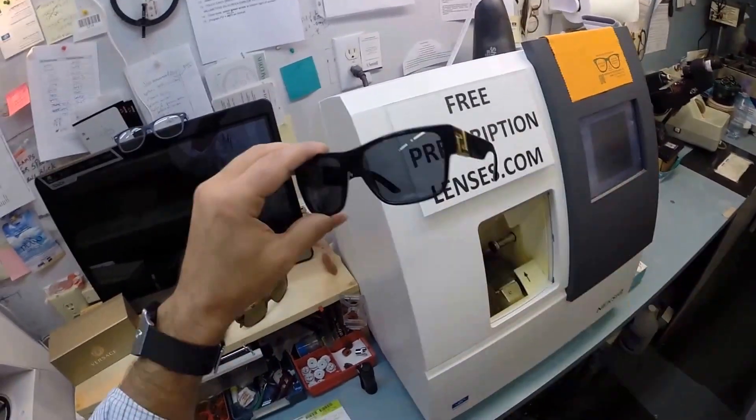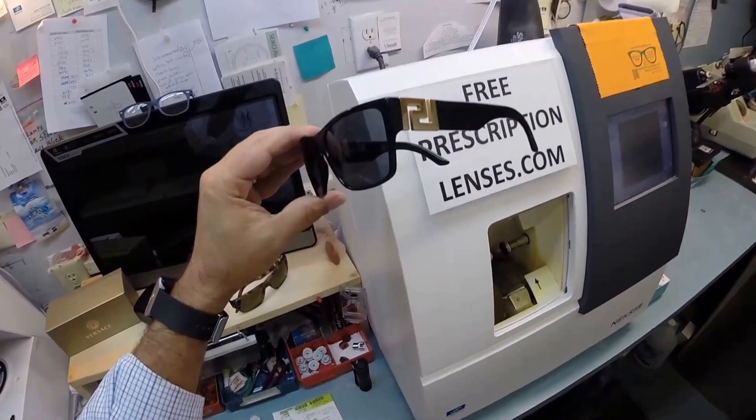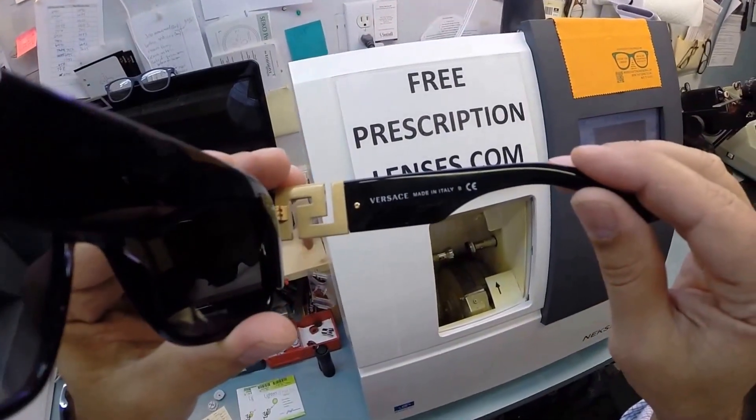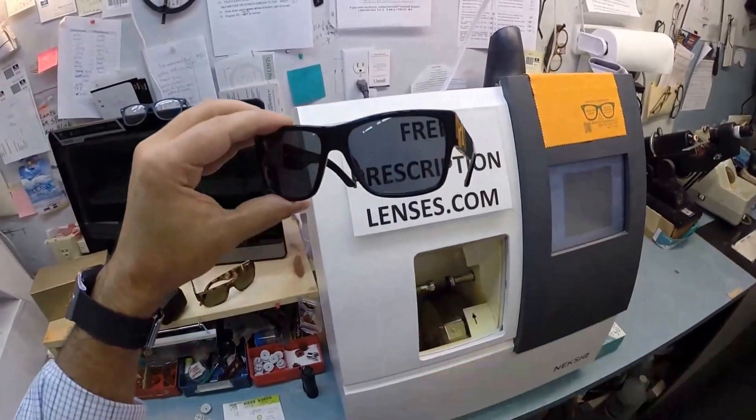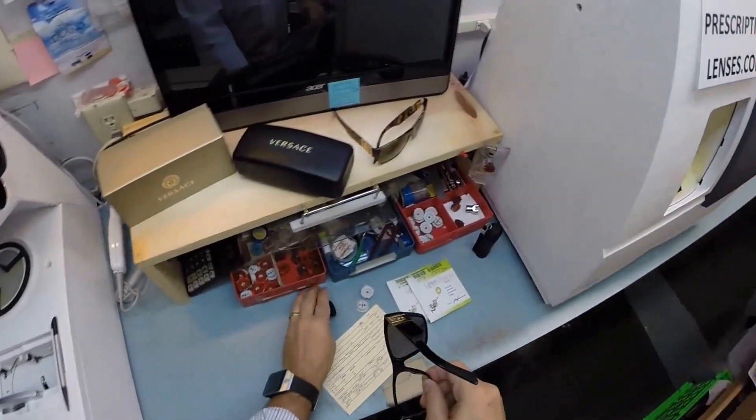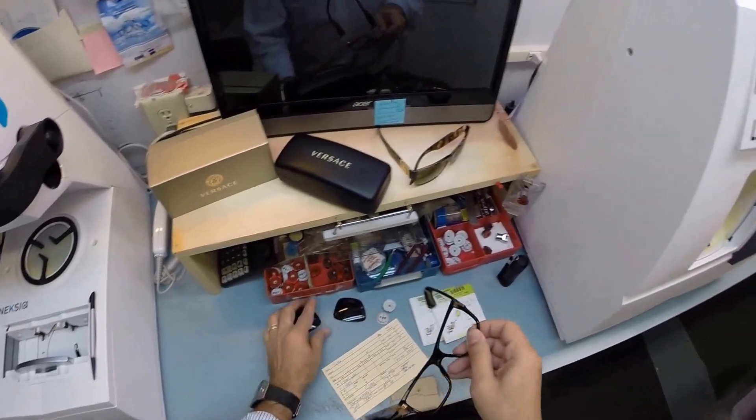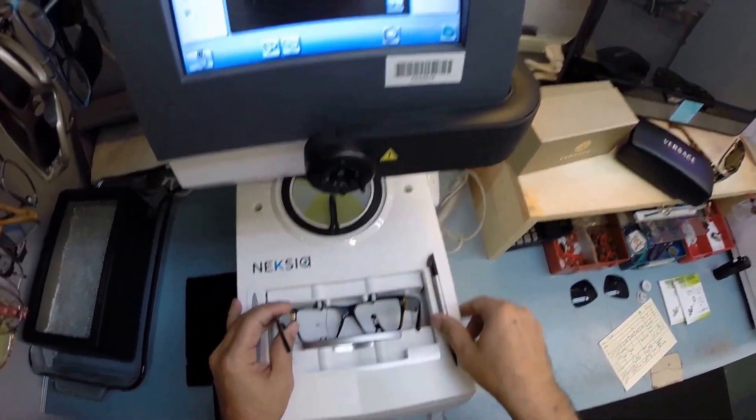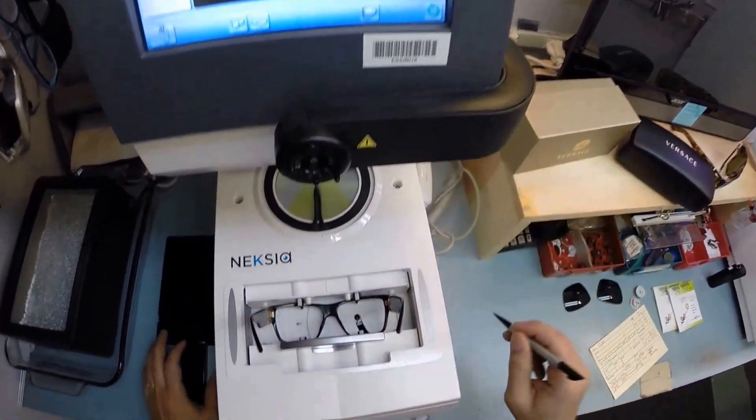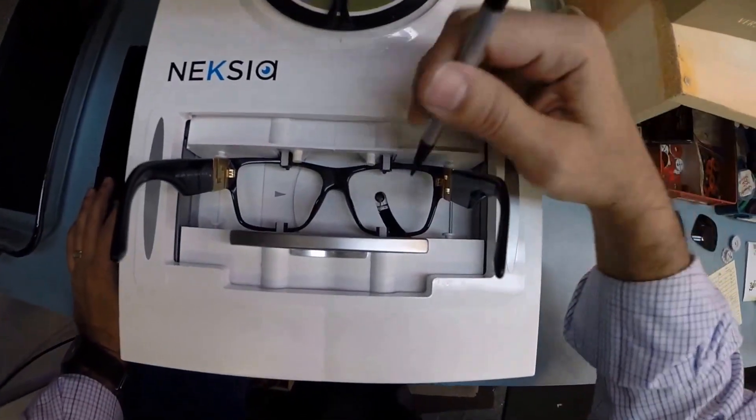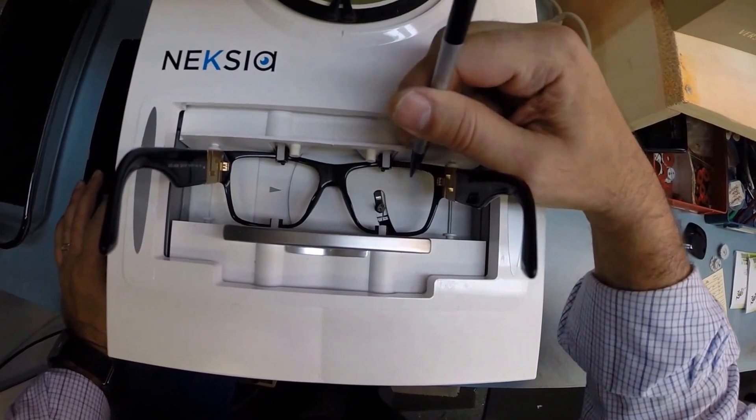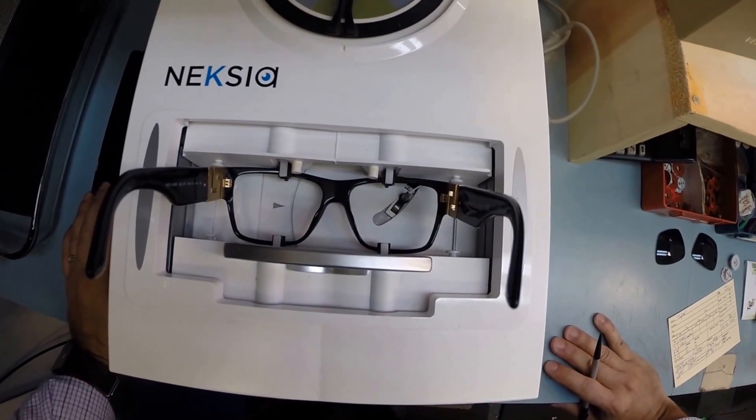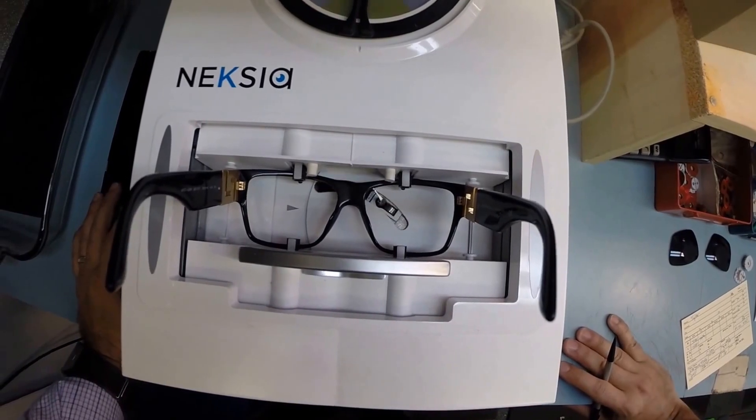This is the one that Biggie Smalls wore in so many videos and pictures. Versace, made in Italy. Let me begin and pop out the original demo lenses. I'm going to put the frame into the tracing element of my edger and hit start. This little stylus is going to trace the right side of the frame before doing the same for the left.